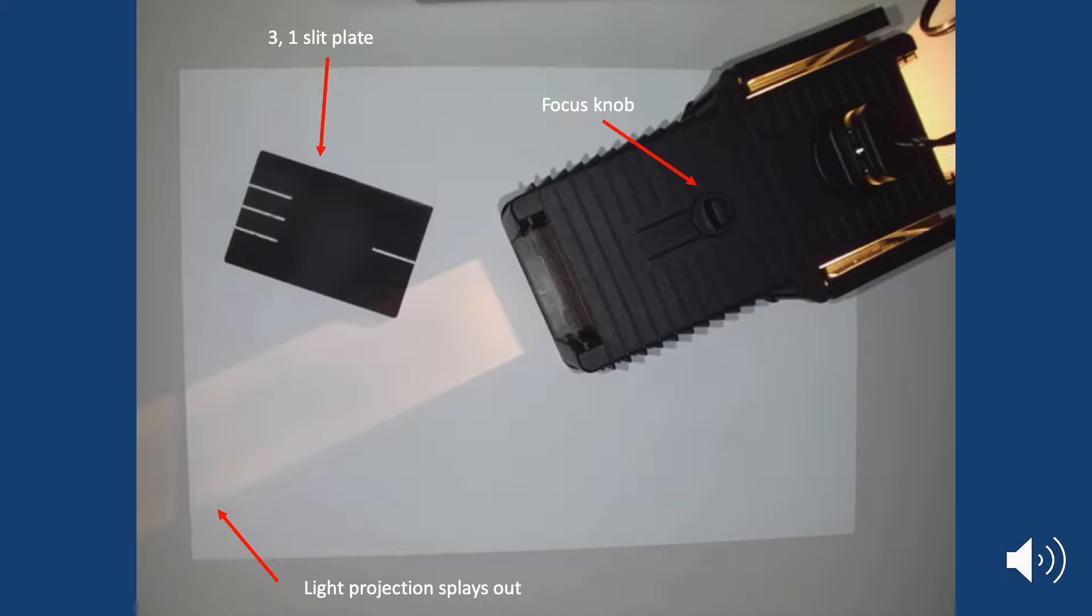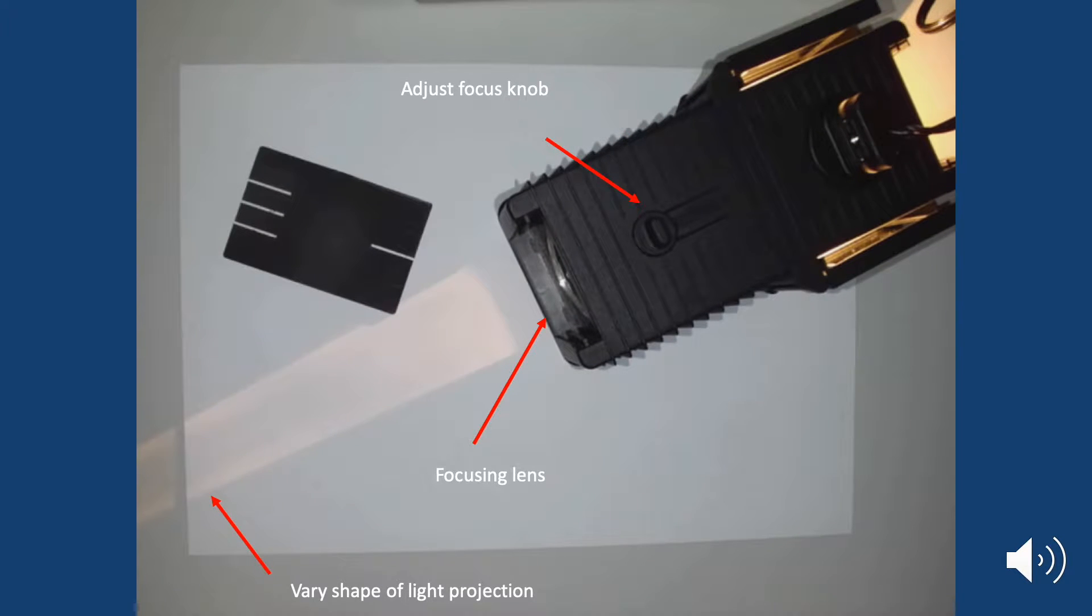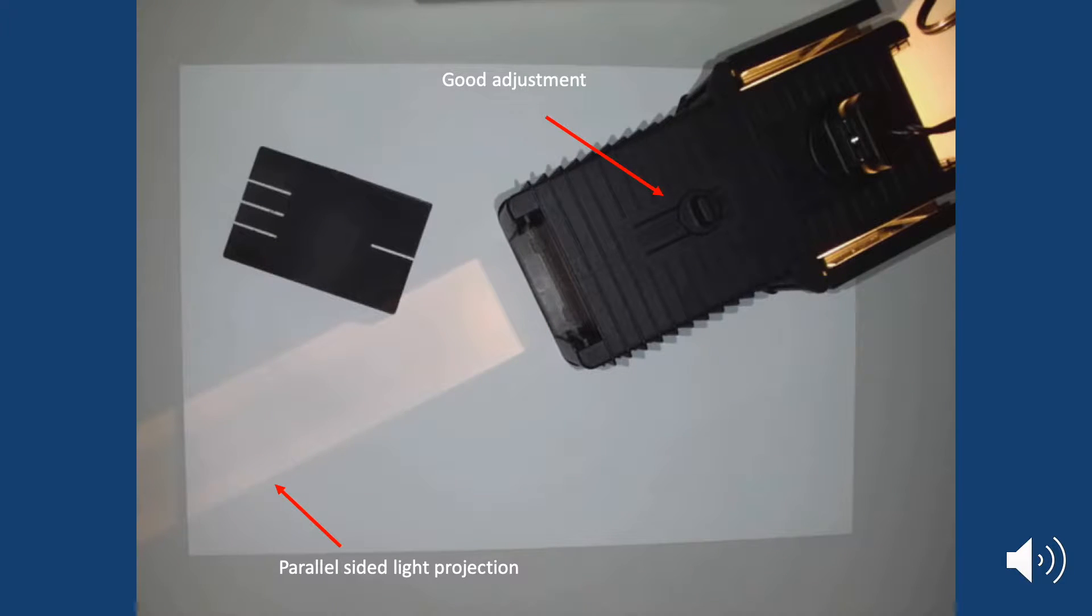The Hodson lightbox has a focus control knob. This knob controls the shape of your light projection. If you move it too far one way then the shape will splay out. If you have it too far the other way the light will splay in. So you want to adjust it so that your light projection is a nice parallel shape moving out.